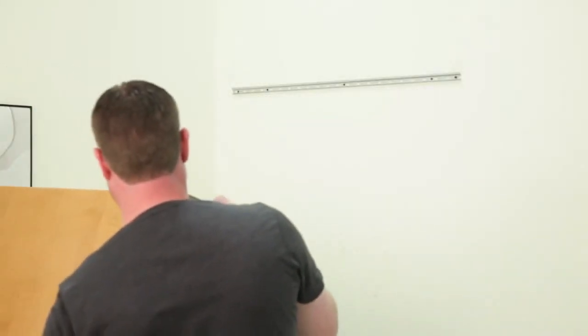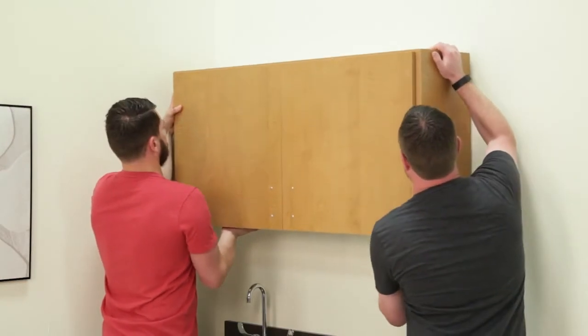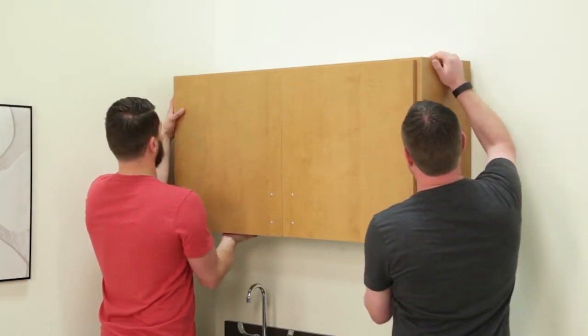Then, using two relatively strong individuals and proper lifting techniques, lift the wall cabinets onto the rail, making certain it hooks the rail on both sides.